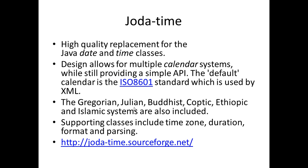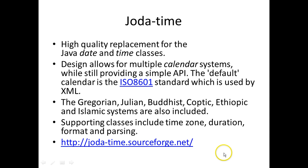There is an open-source package called Joda-Time which provides very high quality replacements for the Java date and time classes. Its design allows for multiple calendar systems including Gregorian, Julian, Buddhist, and Islamic calendars. You can find the documentation for Joda-Time at its URL, and it also has a number of different classes for formatting and parsing dates.